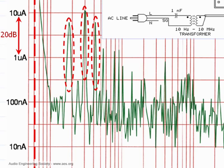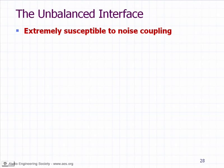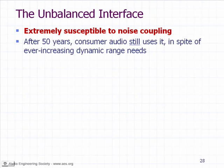Those of you in engineering school may relate to Fourier analysis. Now the unbalanced interface — I can't believe that after 50 years, consumer audio still uses it. It was okay back in the days of 78 RPM records and AM radio when everything was in one big wooden cabinet and cables were no more than a meter or so long. That's what it was intended for — that's how the name came about: the RCA cable.